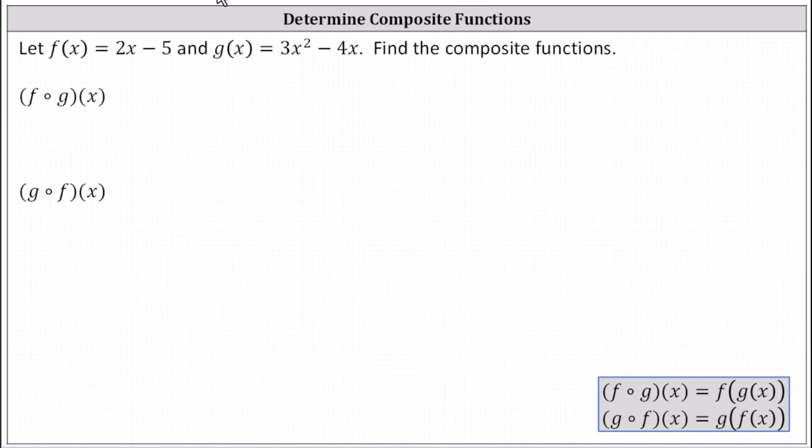First we have f of g of x, and given this form of a composite function, it's often helpful to convert to the alternative form shown below. We can also write f of g of x using this notation here. This notation is usually much easier to work with.